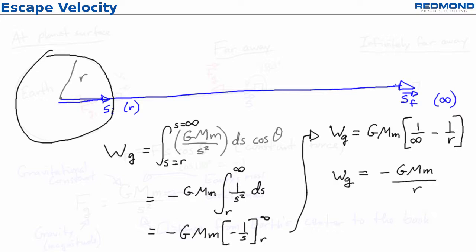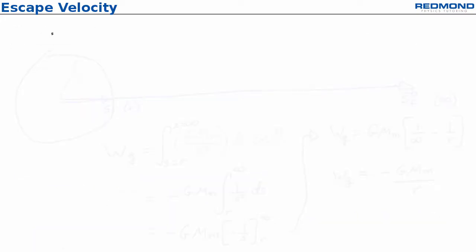Then I use the work energy theorem, the net work is equal to delta K, to relate the work done by gravity to the book's speed. The only force acting on the book is gravity, so the net work, or total work, is just the work done by gravity, which is GMm over R.